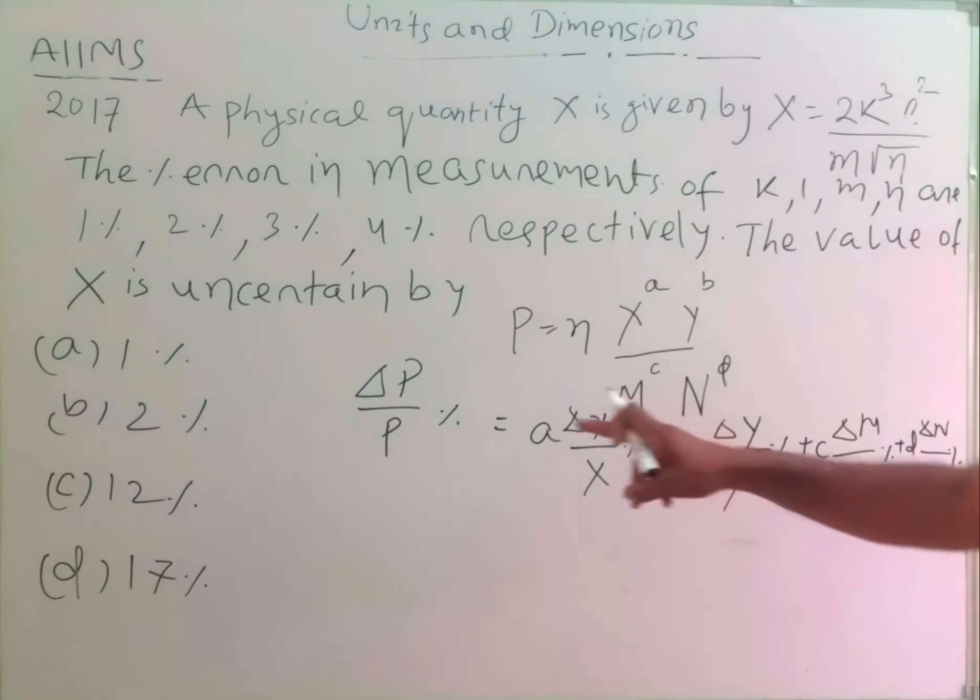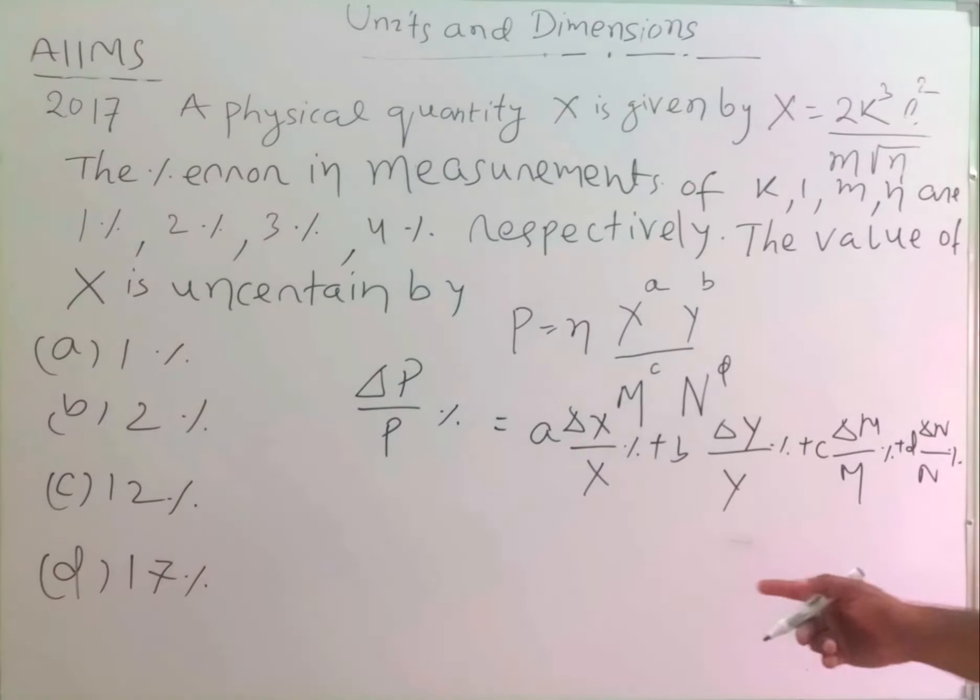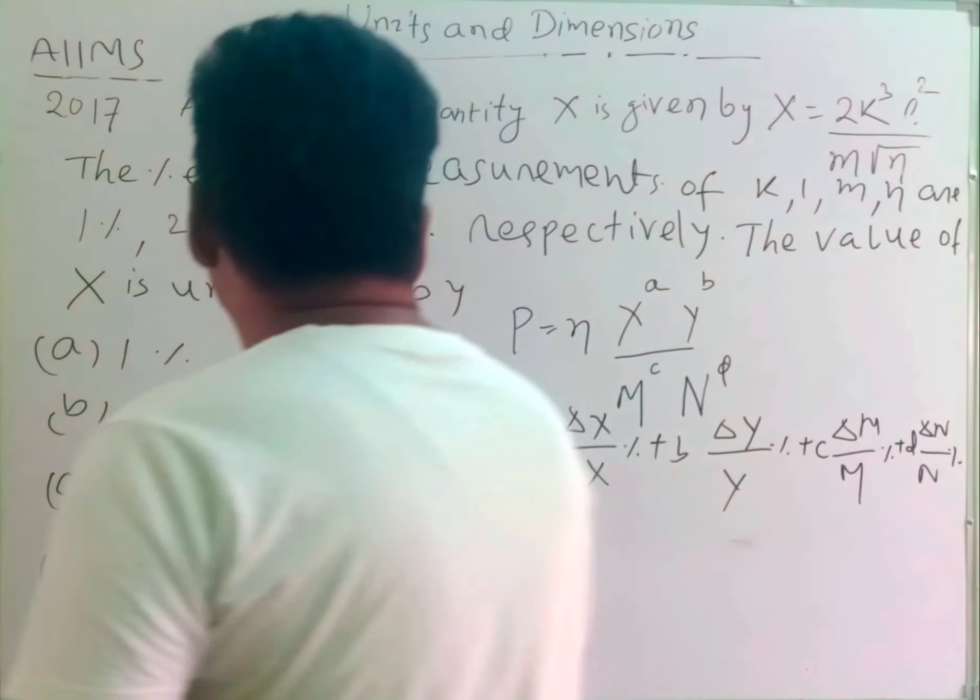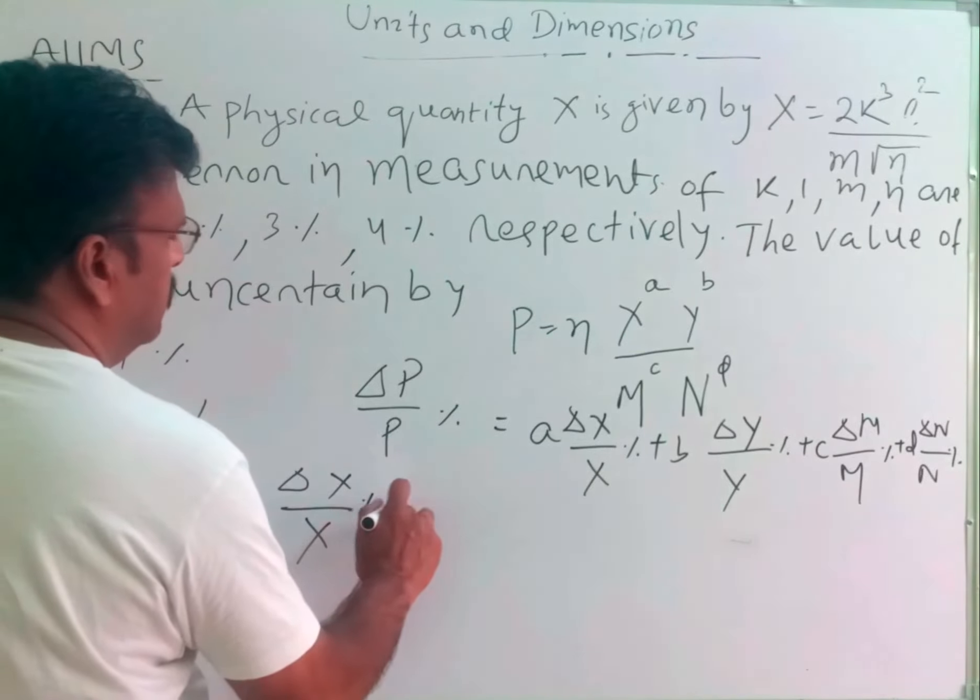Okay students, the maximum possible error in measurement of physical quantity P, the percentage error will be the sum of all the maximum possible errors in measurement of the component physical quantities. So here, ΔX/X percentage.